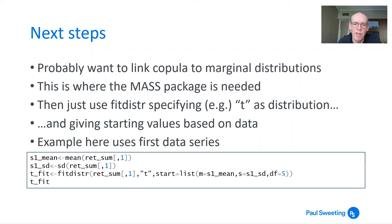Something we called tfit uses the fitDistr function. We're putting in the return summary from the first series. We're telling it to use a t distribution. The starting parameters are: for M, we use S1_mean; for S, the spread parameter which is slightly different from standard deviation - they're linked by degrees of freedom. Then degrees of freedom, we'll start with 5. It doesn't really matter as long as it's not far from where you think it might be.